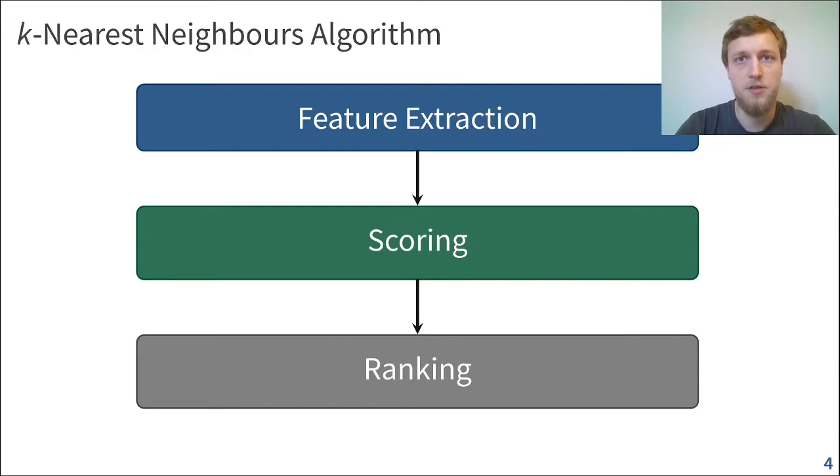First, we need to transform the text documents that we have as inputs into something we can work with, that is vectors over real numbers. Second, we want to perform a comparison of the query document with each of the documents in the database and assign them a similarity score. Finally, we're going to sort the documents by the similarity to the query document and reveal the class that is most common among the k-nearest neighbors of the query document to the client.